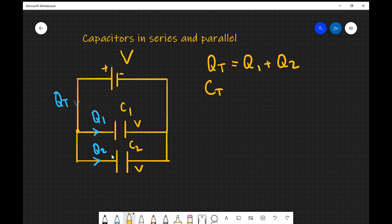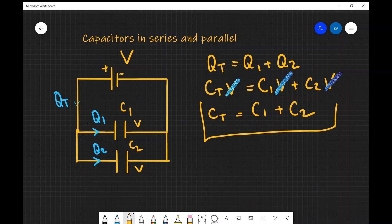Because Q is equal to CV, we know that C total times V is going to equal C1 times V plus C2 times V. Now notice that because this is a parallel circuit, the potential difference V is equal across all of the branches. So I can just go ahead and cancel out with my rainbow pen those Vs. And what I'm left with is that C total is C1 plus C2. So we have successfully proven the second formula as well for adding capacitors in parallel.